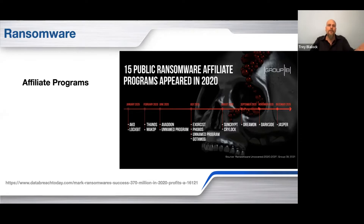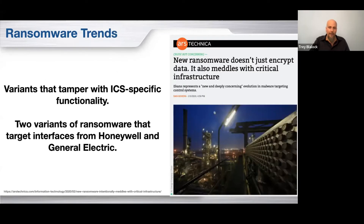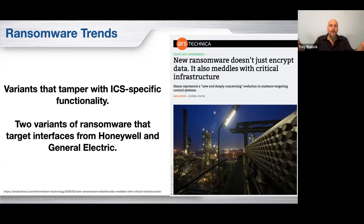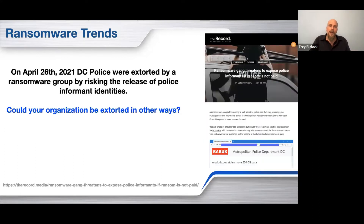There were 15 public ransomware affiliate programs that appeared in 2020. Any one of these is horrifying because it's all AES-256 encrypted — you're not going to be able to decrypt it. The days where you could go download a key off a public site and use it are really slim. We're also seeing variants that tamper with ICS-specific functionality. We haven't seen this used from a ransomware perspective yet, but we're seeing code deployed with ransomware that's designed for ICS controls — to open all the valves in chemical tanks, for example. They're definitely trending down that path.